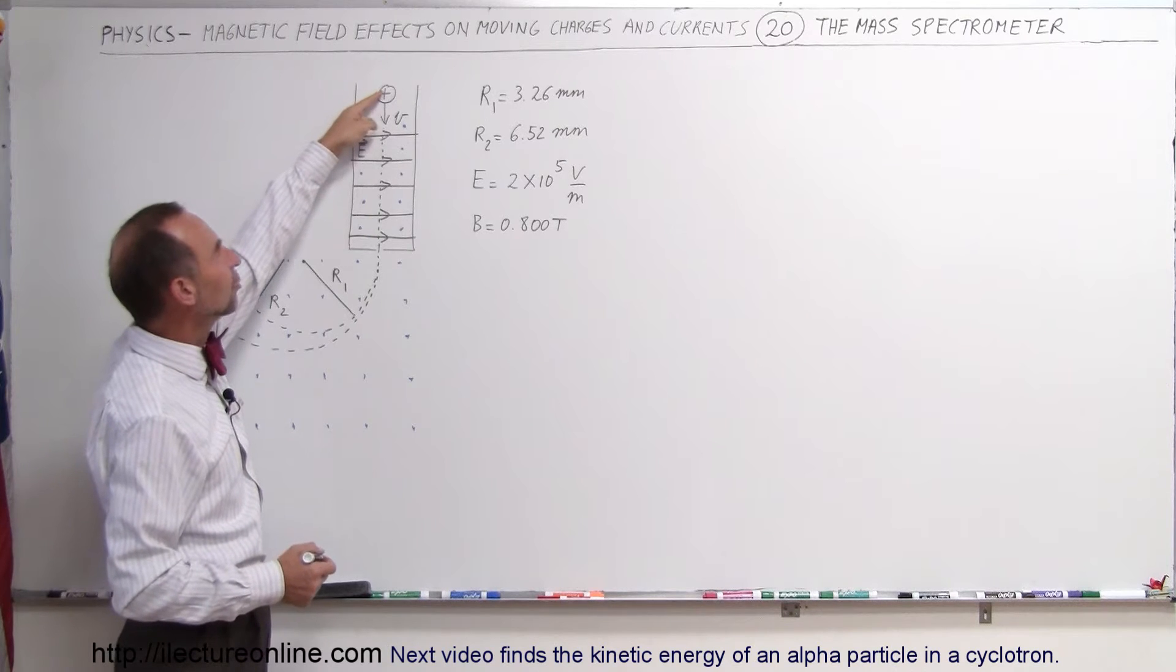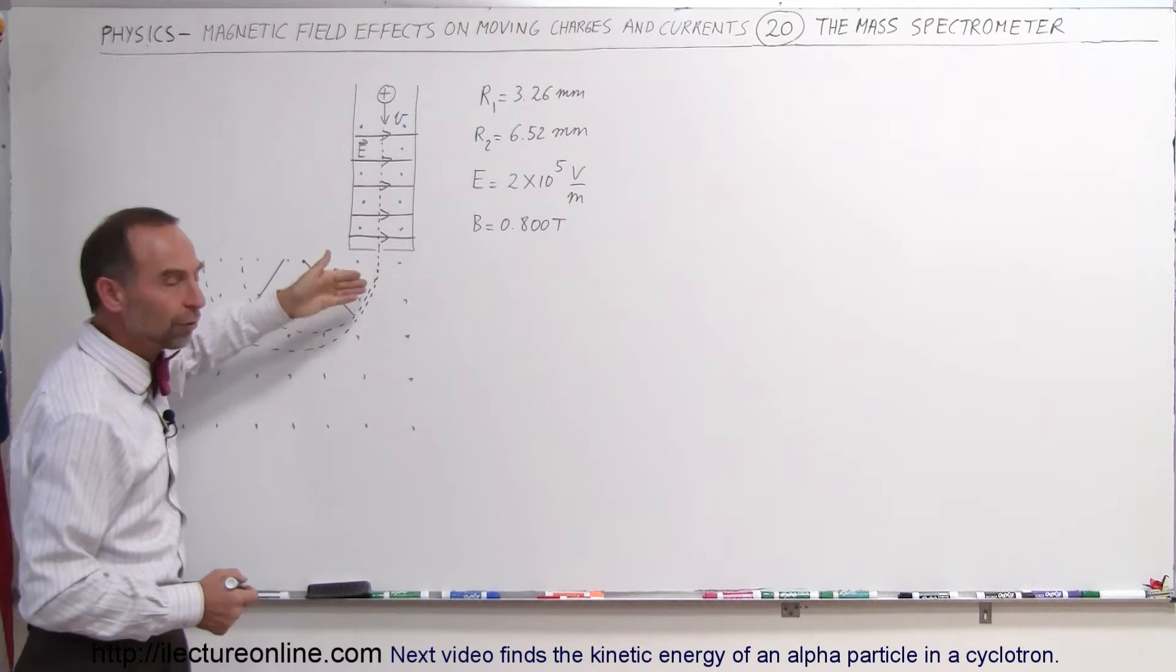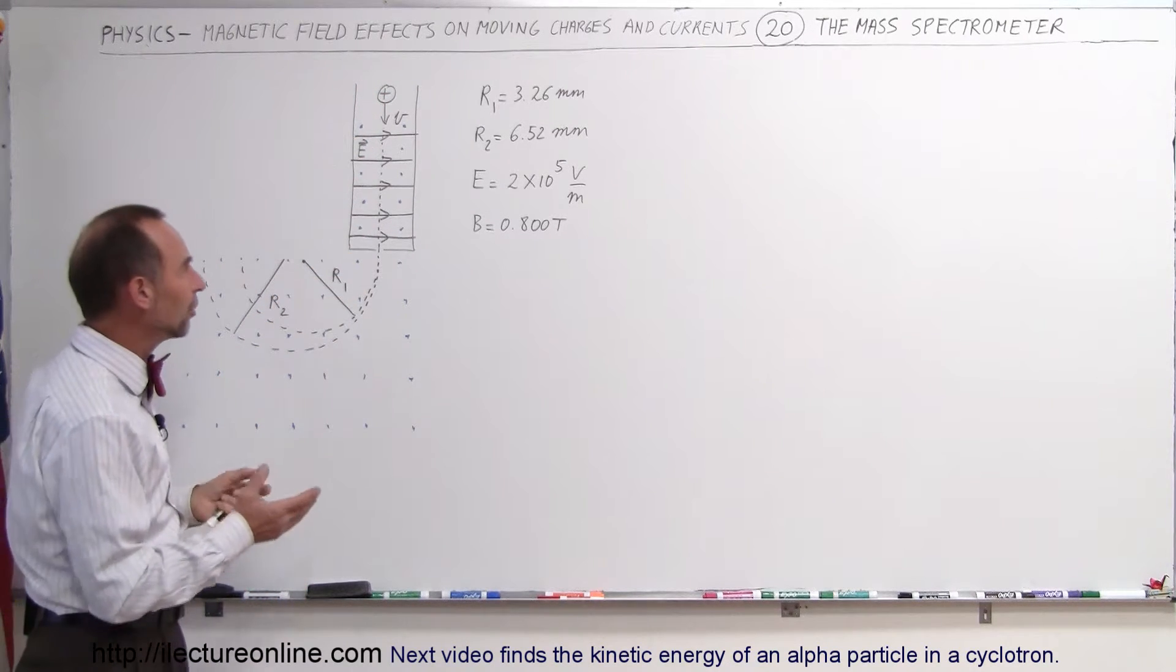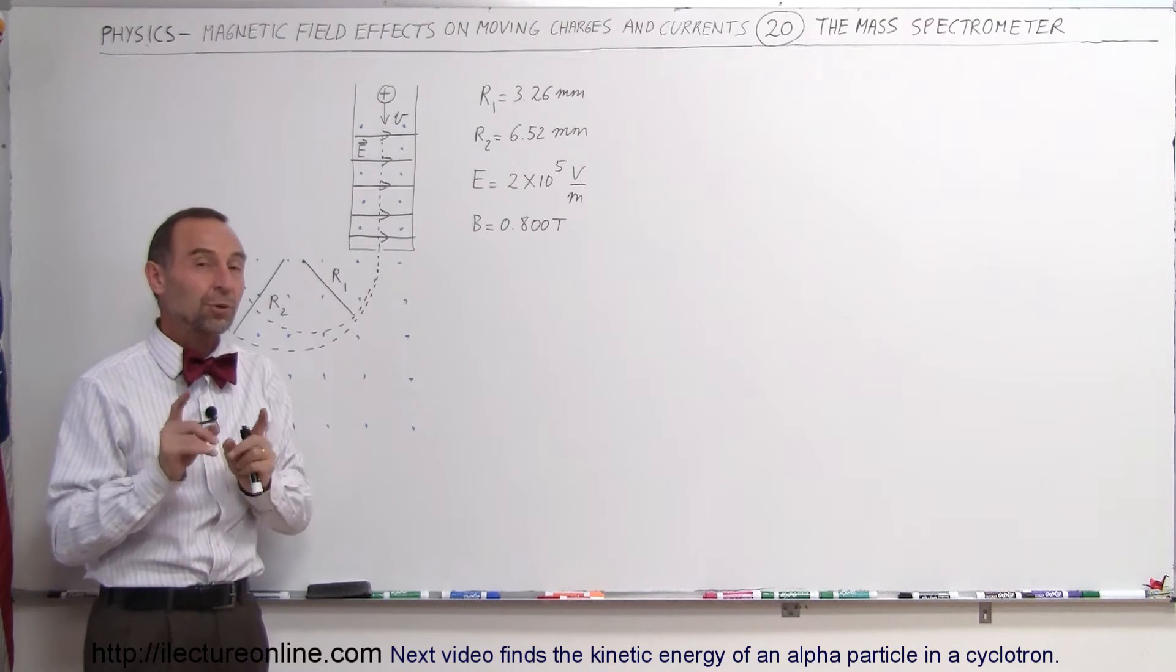Basically what it is, it is a charged particle being shot at certain velocities, so a number of particles. It could be different isotopes and that's what a mass spectrometer does.